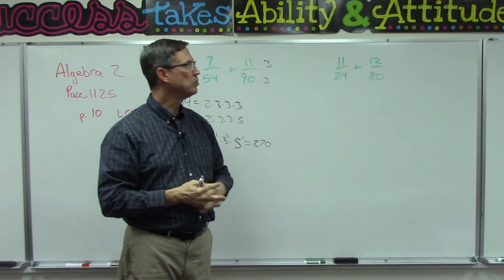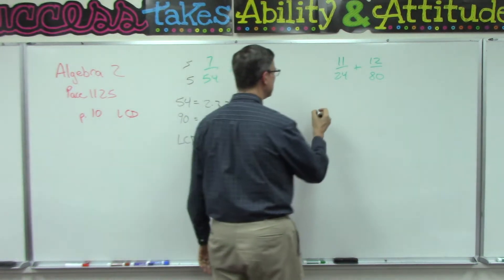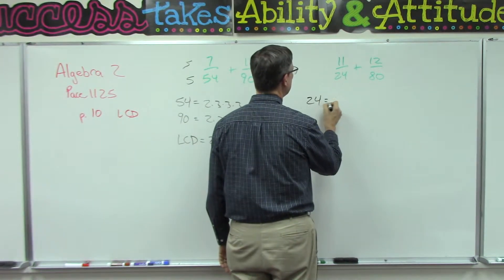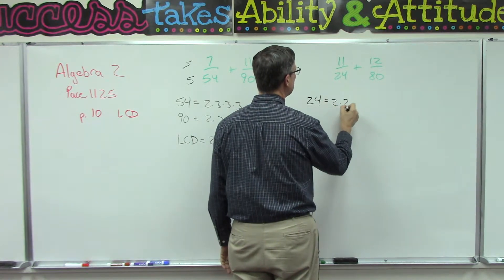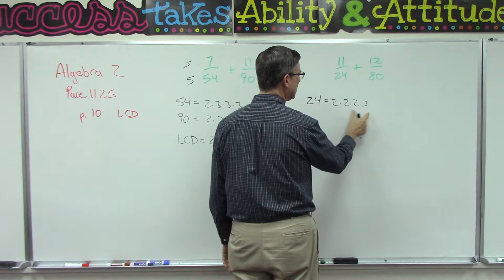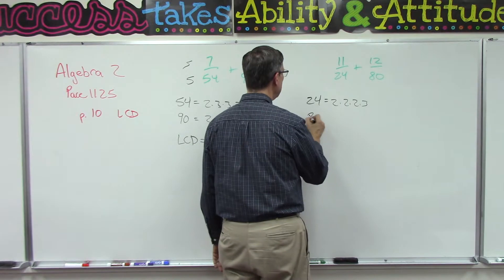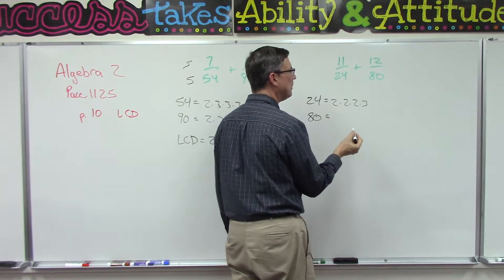All right, let's do one more example. 24, let's think about the factors that make up 24: 2 times 2 times 2 times 3, because it's like 4 times 6 or 8 times 3, whichever way you think about it.